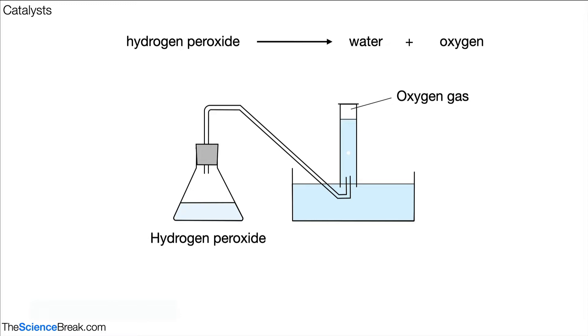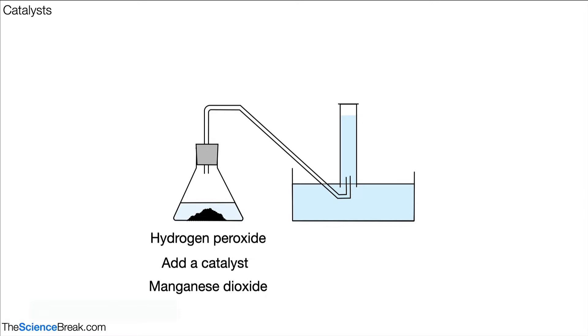What we can do is add a catalyst to make this reaction go faster. Here is our catalyst—this is something called manganese dioxide. It's a black powder. We don't need to worry too much about the name, just the idea that it's a catalyst that can speed up this reaction.